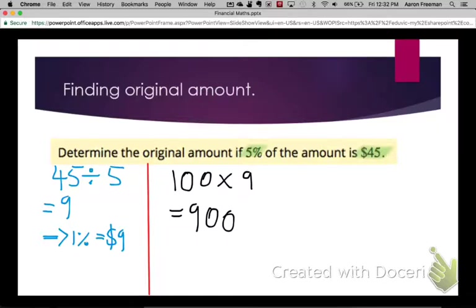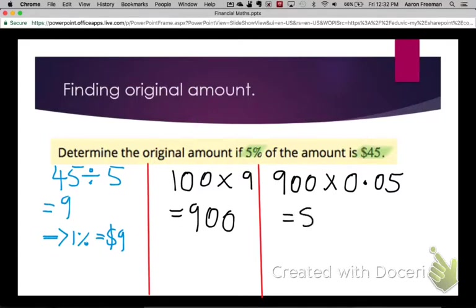Now we can check that that's correct by taking $900 and working out what 5% of that is. So $900 times the percent converted to a decimal, and you'll get $45.